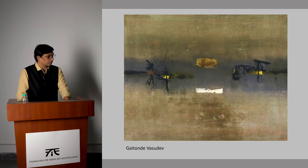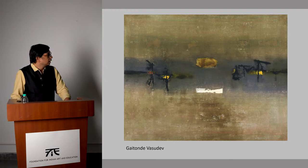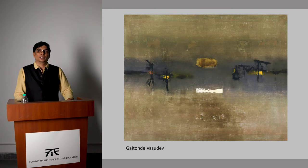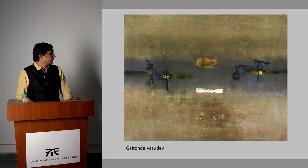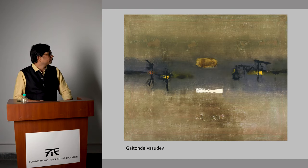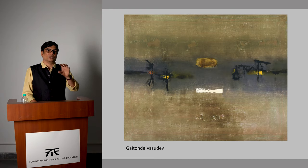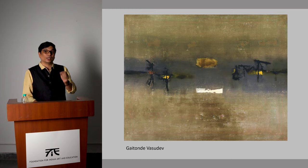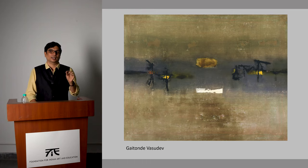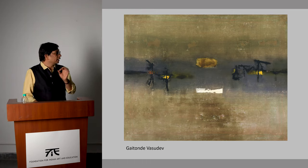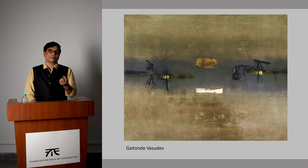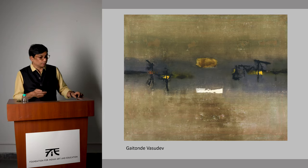This is Gayathunde, one of the finest abstractionists from India. In his lifetime he was not so well acknowledged, but now he has gained international acclaim and many retrospective shows are happening in museums. You will see that Gayathunde has a very dreamy quality — something you cannot really explain. This is that aspect where words fail, and abstraction is an area where it is just about experiencing it; whatever level you can connect with it, you will be able to gain more from that.